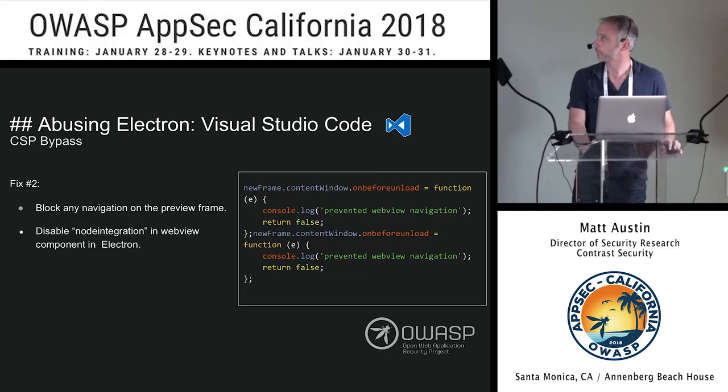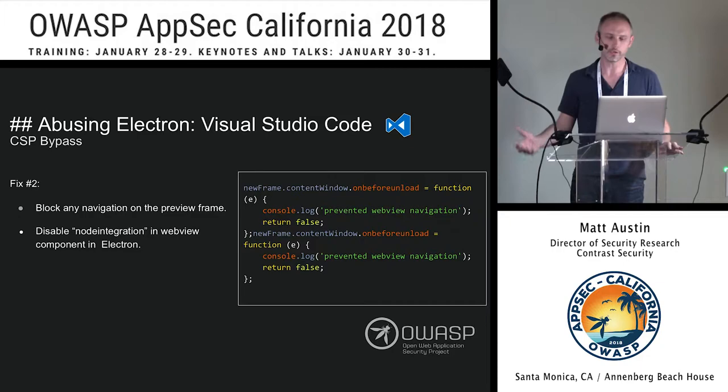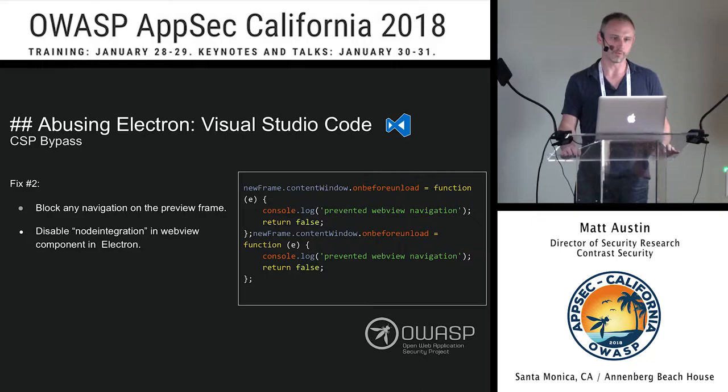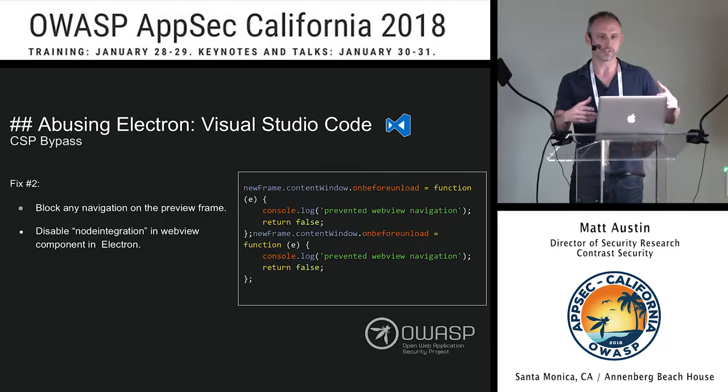How did they fix this? There are a couple of things you can do in Electron to explicitly say 'I don't want you to navigate to a new page' — no meta redirects, no link or form clicks, no new window navigation. They also finally disabled node integrations on the window, which is awesome. If you need to interact with Node, you can use postMessage and other internal services — there are better ways to do it. You shouldn't just allow the browser to have everything Node can do.